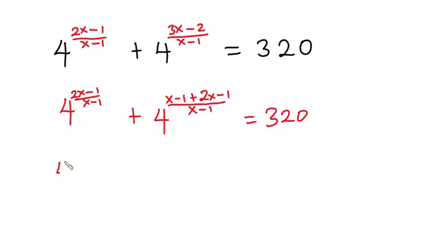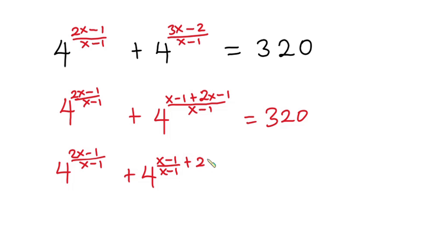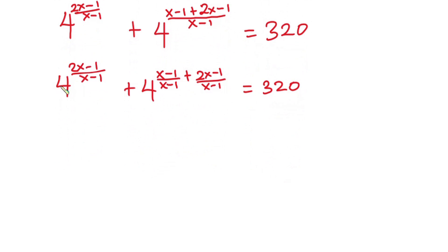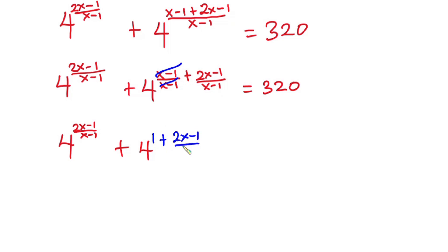So from here I'll keep this one. We have 4 to the power (2x minus 1) over (x minus 1), then plus 4 to the power — now I will split this fraction. So we have (x minus 1) over (x minus 1), which cancels. Now we have 1 plus (2x minus 1) over (x minus 1). And this is equal to 320.